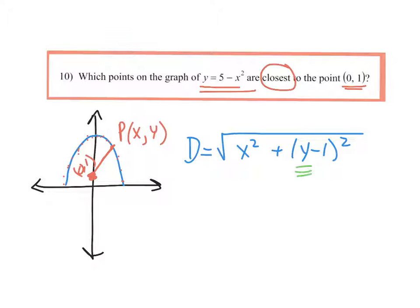So what we need is a constraint. And sure enough, they give us the constraint right here in the statement of the problem. We're going to replace y with 5 minus x squared. We'll clean it up because 5 minus x squared minus 1 is really just 4 minus x squared.